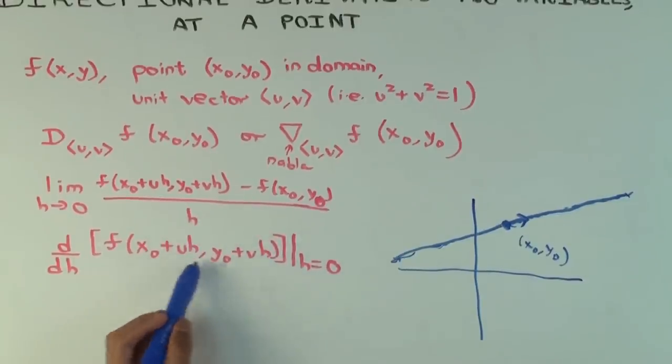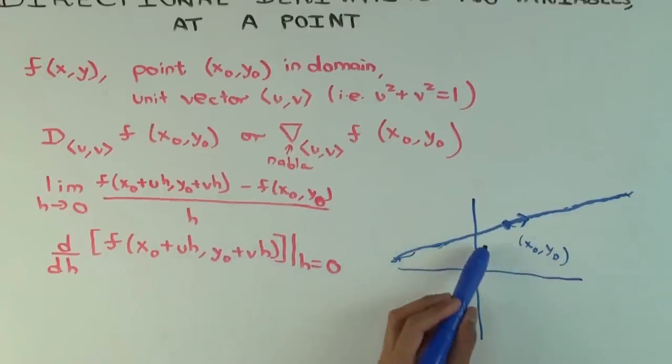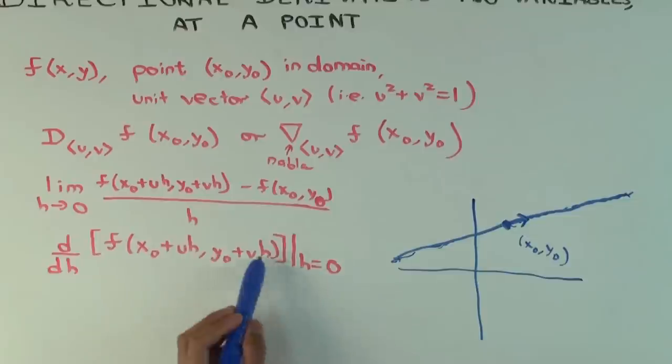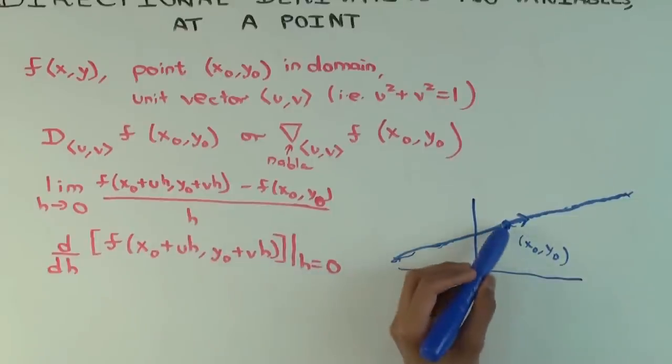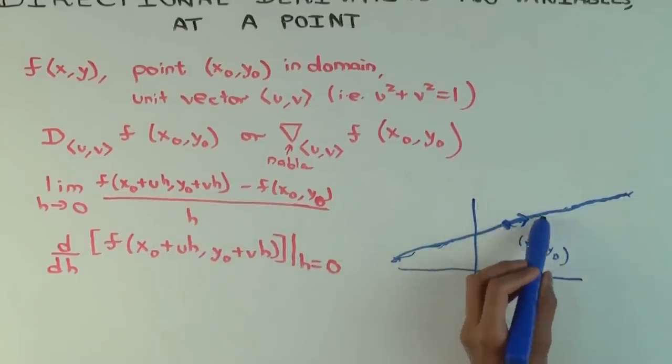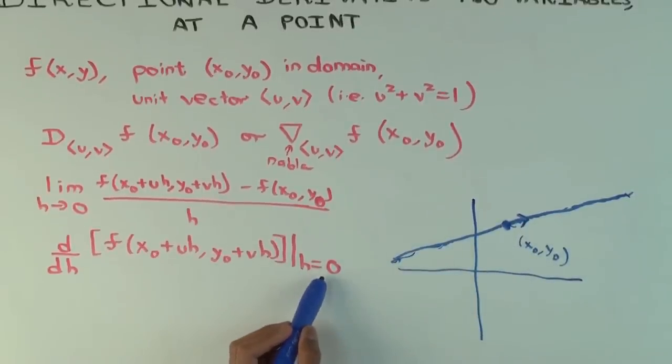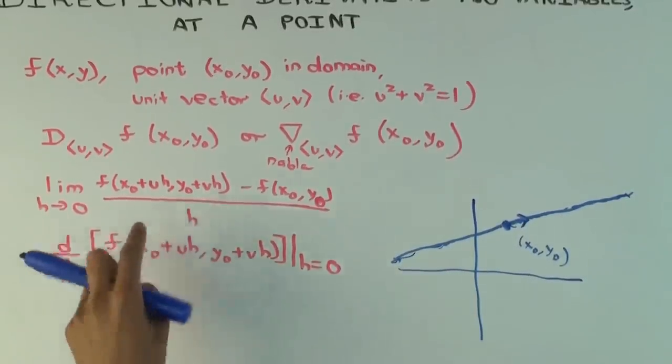What this alternative of thinking of it is doing is this thing is that instead of thinking of the original function f, you think of this new function which is just a function of one variable h, because all x₀, u, y₀, and v are all fixed. So this is a function of one variable and it sends h to this number. So given any h it first locates the point and then sends it to that and the derivative of that at h equals 0.